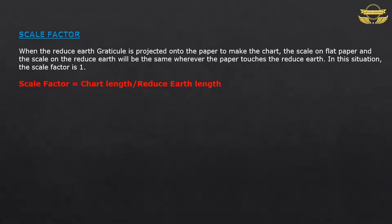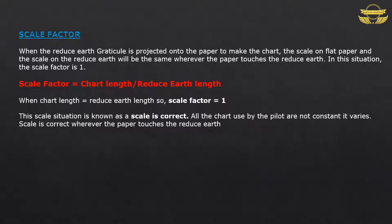Scale Factor equals Chart Length divided by Reduced Earth length. When Chart Length equals Reduced Earth Length, the scale factor will be 1. This scale situation is known as Scale is Correct. All the charts used by the pilot are not constant; it varies. Scale is correct wherever the paper touches the reduced earth.